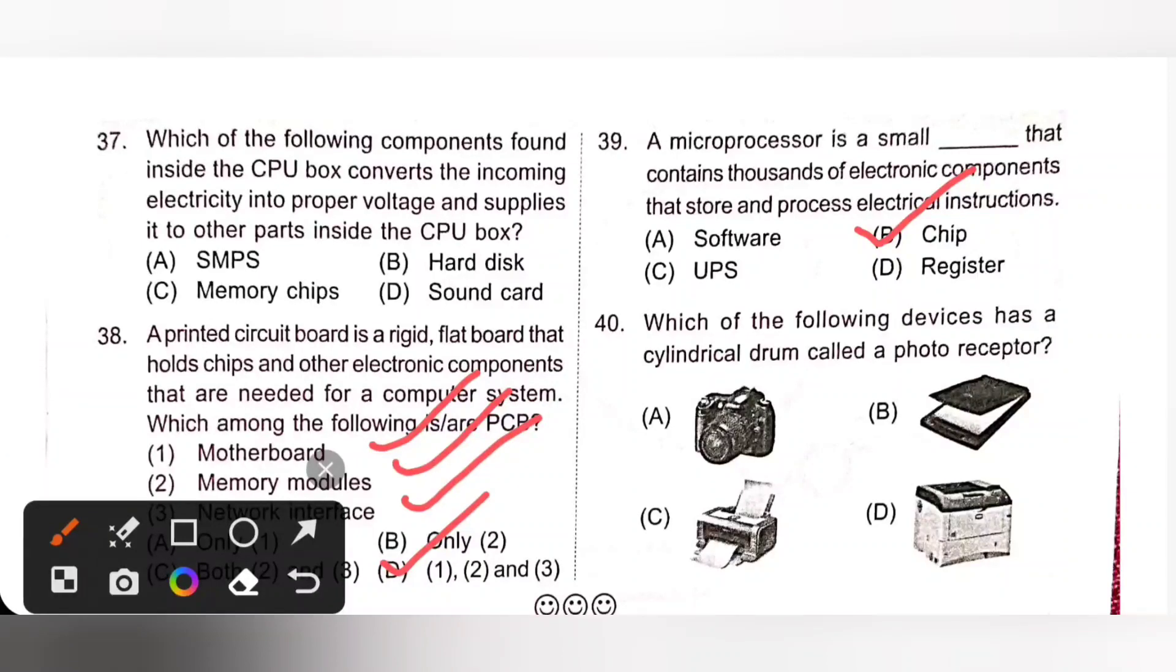Last one. Which of the following devices has a cylindrical drum called photoreceptor? A laser printer contains a photoreceptor which is a core part of a laser printer. Data to be printed is stored in printer's memory and then laser beam is passed on the drum to draw the letters and images that need to be printed using a toner. Laser printer, option D is the correct answer.